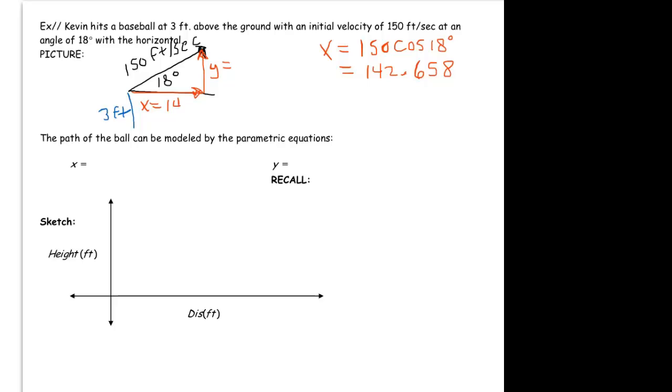So that's the initial horizontal velocity, and y would just be 150 sine of 18 degrees, which turns out to be 46.353.